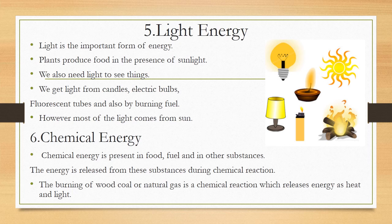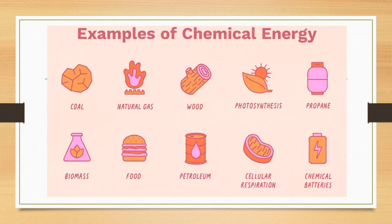Chemical energy is a form of stored or potential energy present in food, fuel, and other substances. Energy is released from these substances during chemical reactions. The burning of wood, coal, or natural gas is a chemical reaction which releases energy as heat and light. Examples of chemical energy include coal, natural gas, wood, photosynthesis, propane, biomass, food, petroleum, cellular respiration, and chemical batteries.